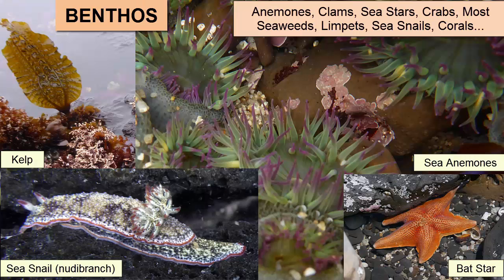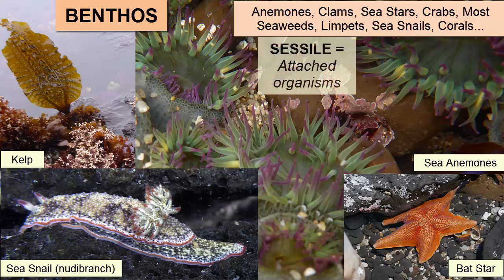Benthos are organisms that live on or in the seafloor sediment. These organisms can be attached or freely moving but must be unable to swim. Examples include anemones, clams, sea stars, crabs, and most seaweeds, which attach to rocks by holdfasts.